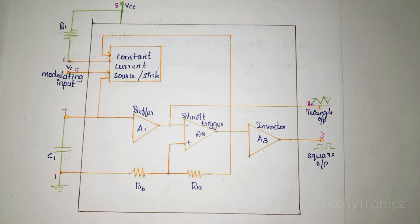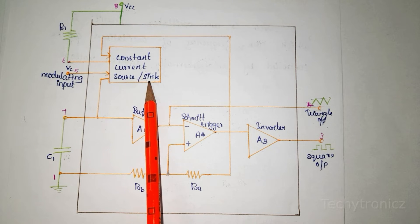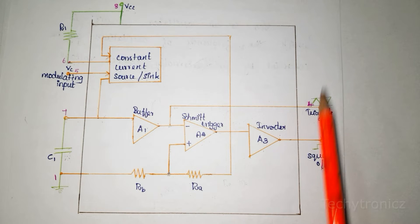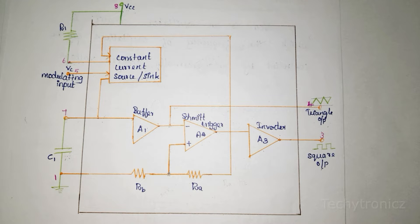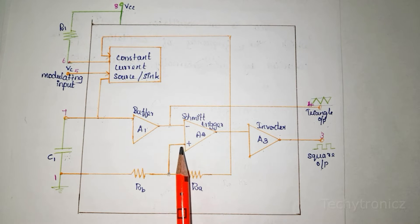The IC also has one constant current source and sink. Source means it delivers power; sink means it absorbs power. This VCO is a relaxation type oscillator, meaning the output frequency depends upon the charging and discharging of the capacitor. Controlling frequency by charging and discharging of the capacitance is called the relaxation type.